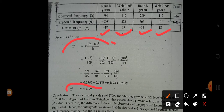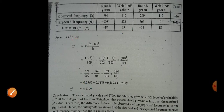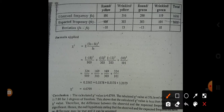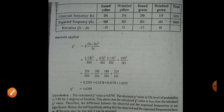By putting these deviations into the chi-square formula, we get a calculated chi-square value of 4.4679. We compare this with the tabulated value at the 5% level of significance. For degree of freedom, since we have 4 characters, n minus 1 gives degree of freedom = 3. For 3 degrees of freedom at the 5% level of significance, the tabular value is 7.80.